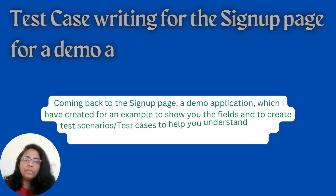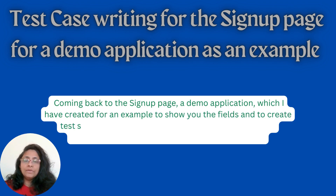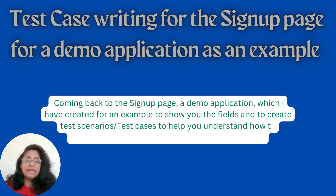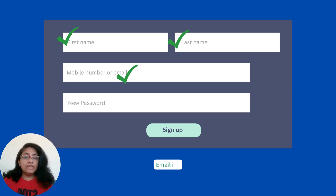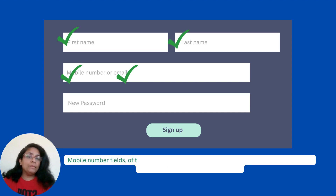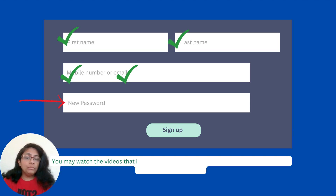This video covers test case writing for the sign-up page of a demo application. Coming back to the sign-up page, I have created this demo application to show you the fields and to create test scenarios and test cases, helping you understand how to document and write these step by step. I have already explained how to write test cases for the first name, last name, email ID, and mobile number fields in my previous videos. I am now going to create the test cases for the password field.